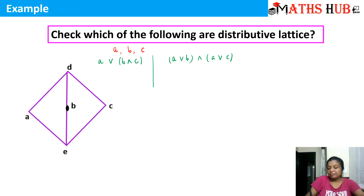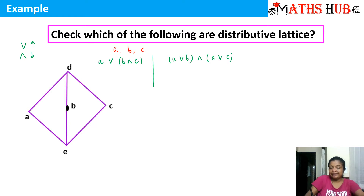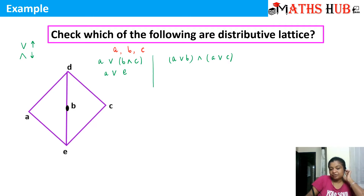Now what is B meet C? I hope you remember the meanings of join and meet — it is very important throughout this chapter. The join is the first point of contact in the upper direction. Meet is the first point of contact in the downward direction. So B meet C is the element E. So you will get A join E, and A join E is the element E.